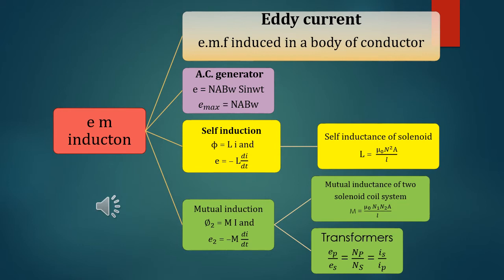AC generator: the induced EMF in an AC generator is equal to NABω sin ωt, and the maximum value of induced EMF is equal to NABω. Self induction: the flux linked with the coil is φ = LI.